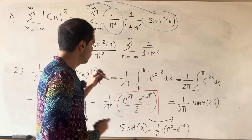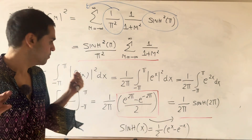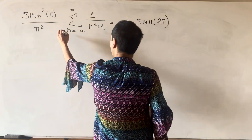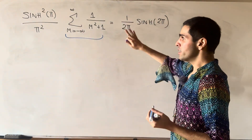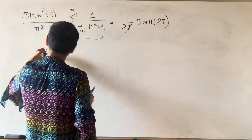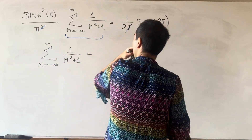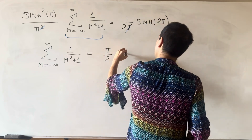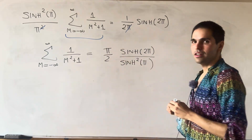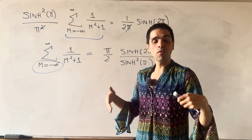Now let's combine both sides. We have sinh squared of pi over pi squared times the sum we want, equaling 1 over 2π times sinh of 2π. We can cancel one of the pi's and solve for the sum, giving the sum from minus infinity to infinity of 1 over m squared plus 1 equals pi over 2 times sinh of 2π over sinh squared of pi. But we don't want the sum from negative infinity to infinity — we want the sum from 1 to infinity.